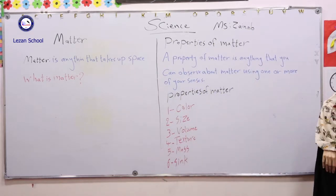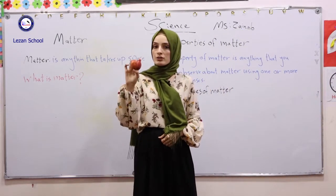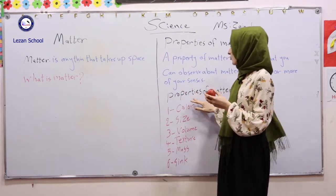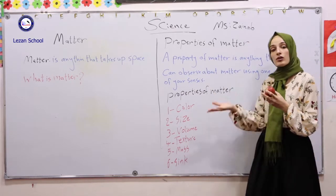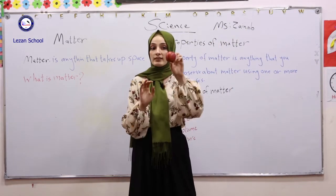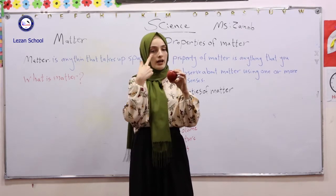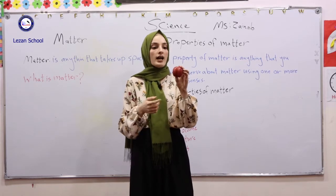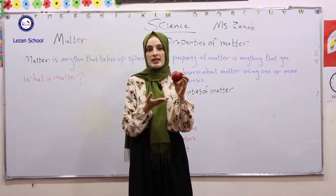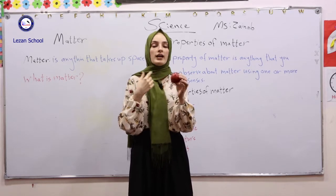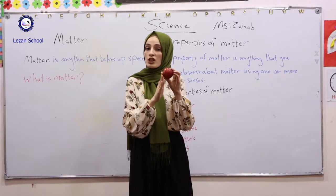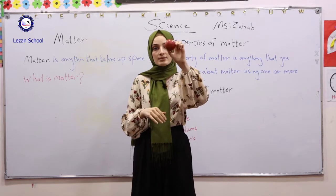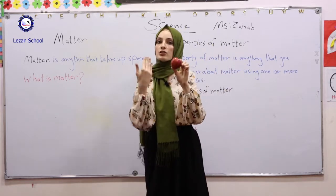For example, we have an apple. We can use our senses to observe the properties of this apple — the color, the size, the volume, the texture. If you use the sense of sight, you can observe the color of it; it is red. If you use the sense of taste, you can observe the taste of it; it is sweet. And if you use the sense of touch, you can observe it is smooth. These are properties of this matter.